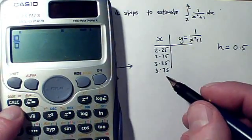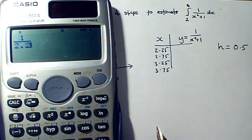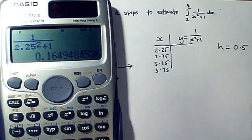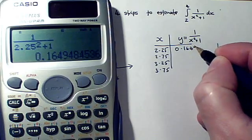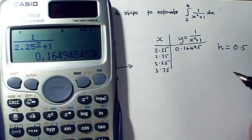So for the first one, I'm going to be doing 1 over 2.25 squared plus 1, which is 16.97, or as a decimal, 0.16495. Always go to five significant figures or so in your decimals.